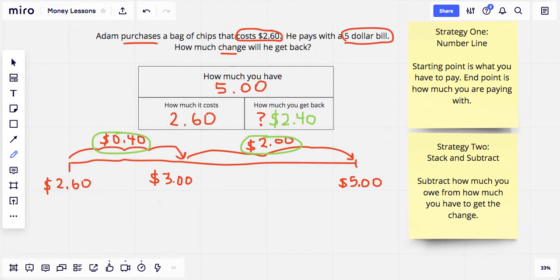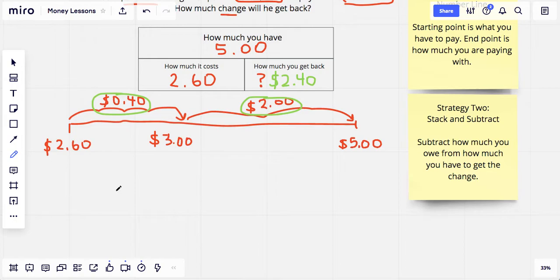Now I want to show you the subtraction, stack and subtract way. If we were to stack and subtract, we would take how much Adam has in order to find our missing number, and we would subtract how much Adam is paying, which is $2.60. And we would subtract this way. So I would look at my zeros on top, and there's a zero underneath, so that would stay a zero.